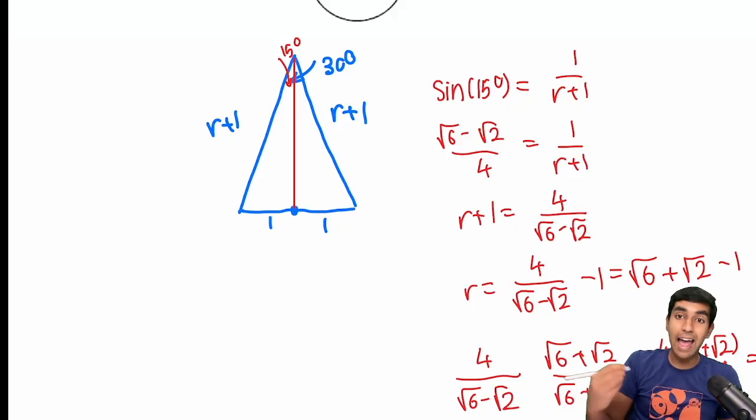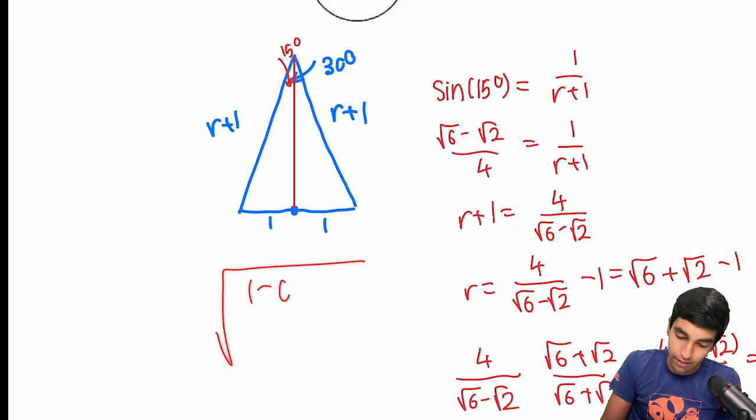One is you could use sine of 30, which is half, and then use the half angle formula: 1 minus cosine theta over 2.